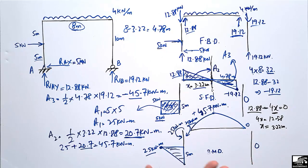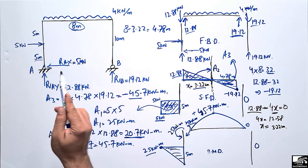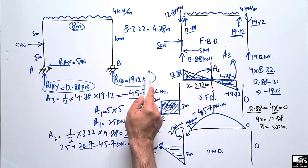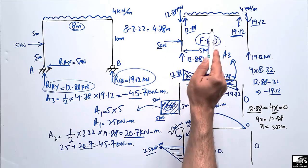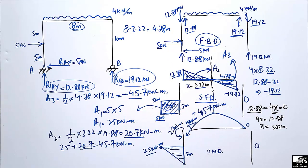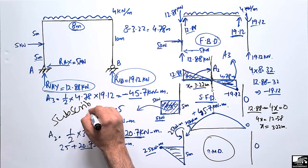In summary: first find the support reactions, then draw the free body diagram, then use the FBD to draw the shear force diagram, and finally use the shear force diagram to draw the bending moment diagram. Hope you understand — don't forget to subscribe to our channel. Thank you for watching.